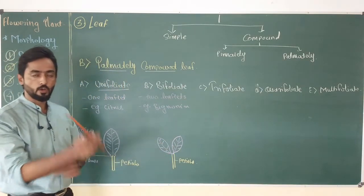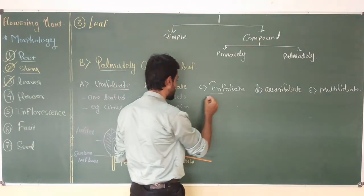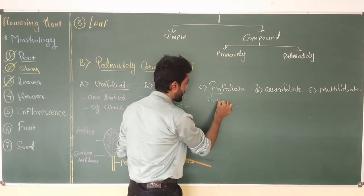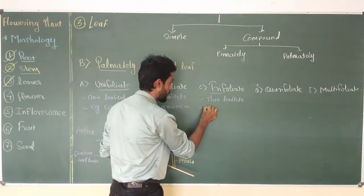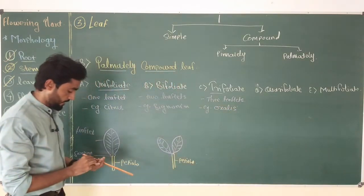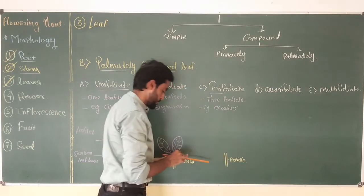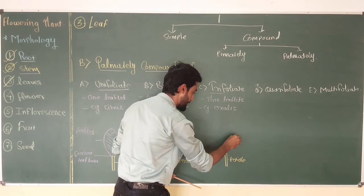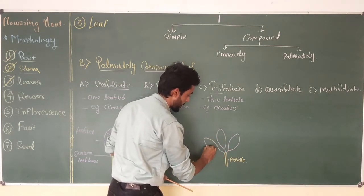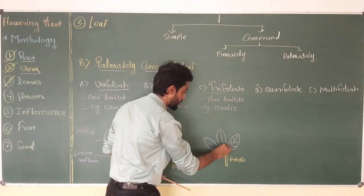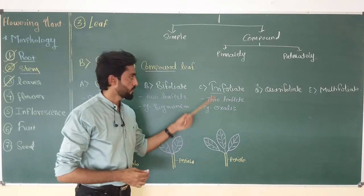The third type of leaf is trifoliate. The name itself suggests tri means three, so in this type of leaf three leaf plates are present. The example of this type of plant is oxalis. The leaf will look like a petiole to which three leaf plates are attached, and all the leaf plates will show a mid-rib and branches. Remember the example oxalis for trifoliate leaf.